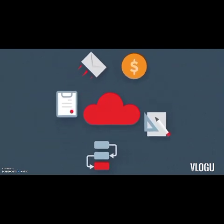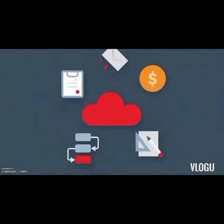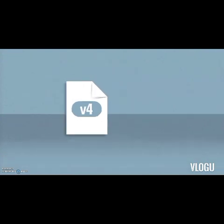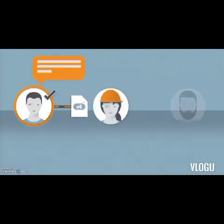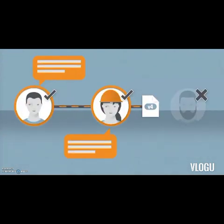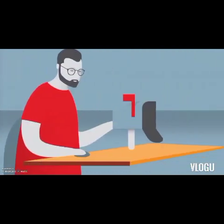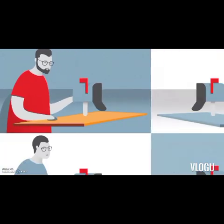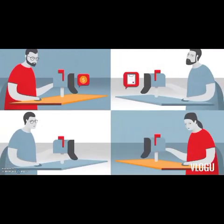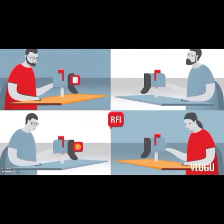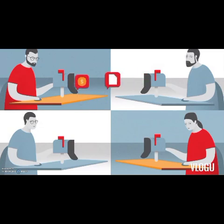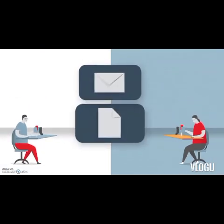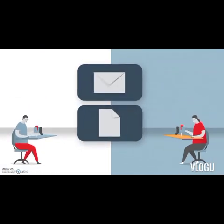AconX is your single source of truth on the project. Instead of having hundreds of different tools, AconX is all you need. You'll always know what the current version of a document is and who's holding up the process in document reviews. You can also automate correspondence so that the right people always get the right information and respond with exactly what you need to keep the project moving.